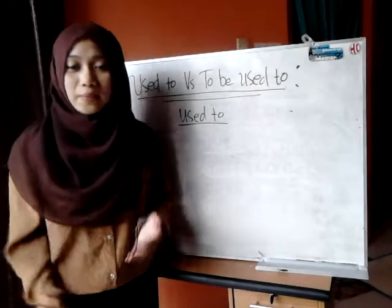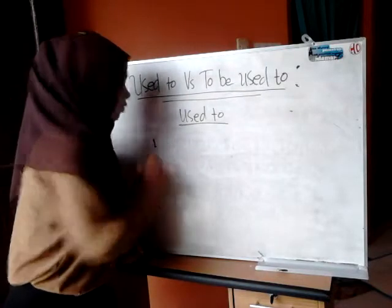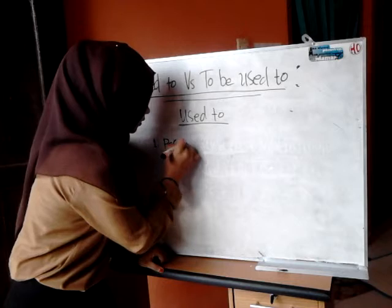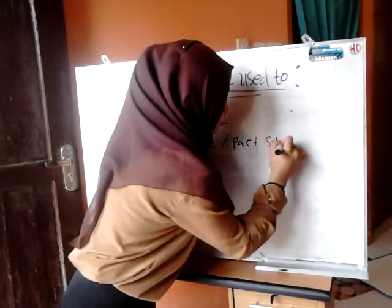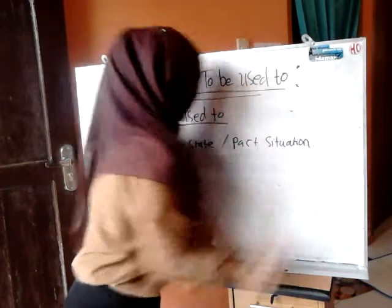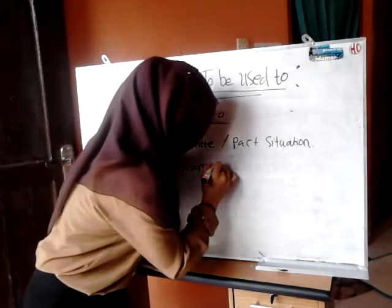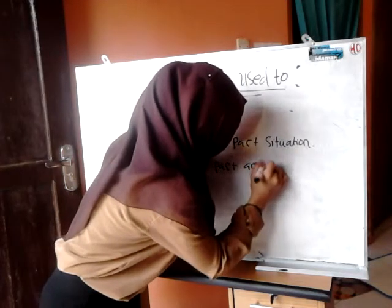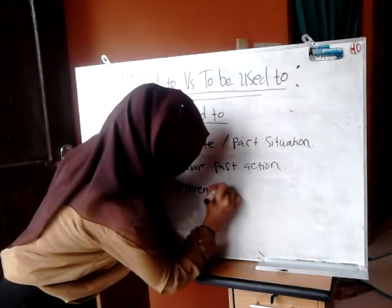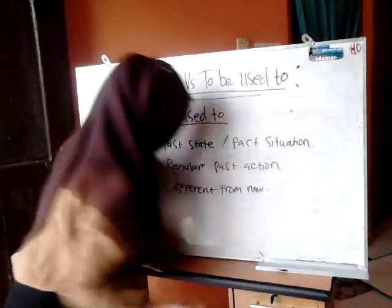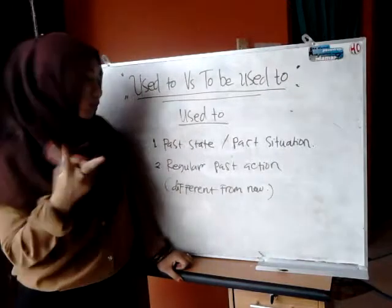'Used to' is used to describe something that we did in the past. So we can say that 'used to' is for: first, past state or past situation; and second, a regular past action that differs from now.